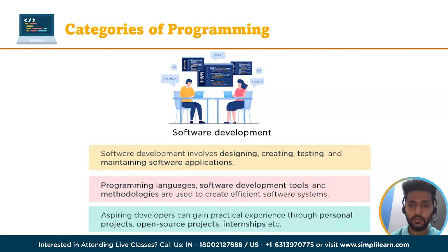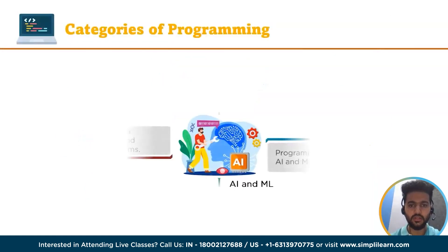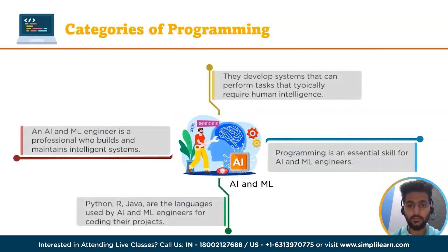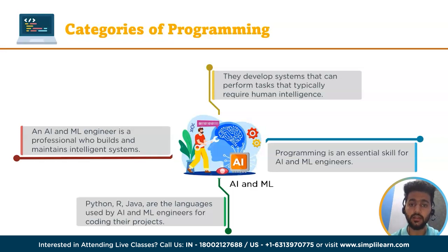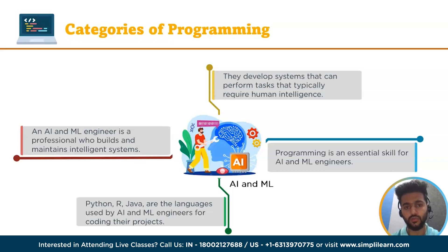The third category of programming in our list is AI and ML. An AI and ML engineer is a professional who designs, builds and maintains intelligent systems that can perform tasks that typically require human intelligence. Programming is an essential skill for both AI and ML engineers as they need to develop and implement algorithms, models and systems that can perform intelligent tasks. AI and ML engineers typically use programming languages such as Python, R, Java or C++ to write code for their projects.